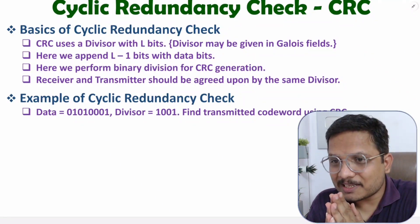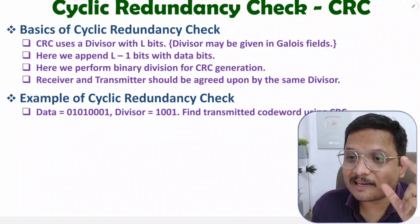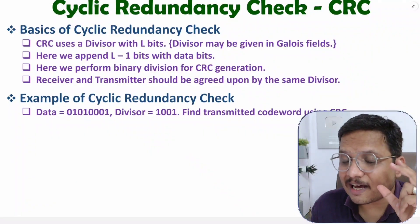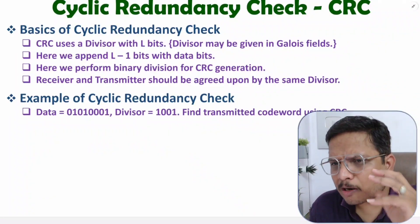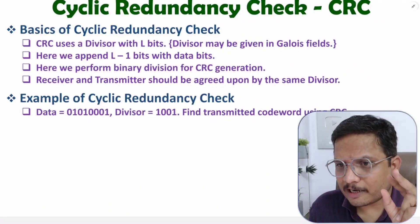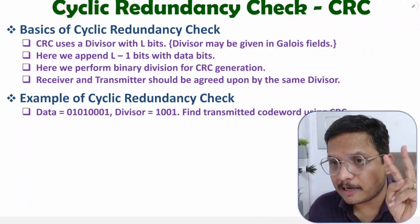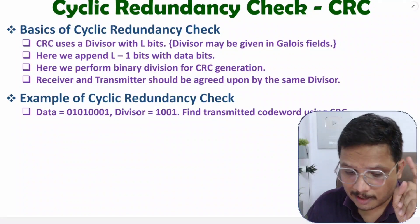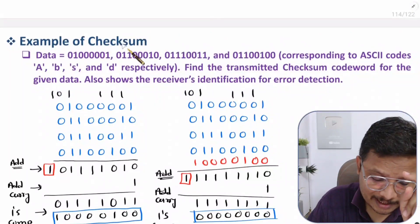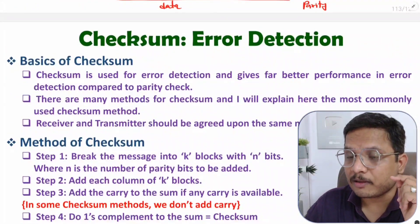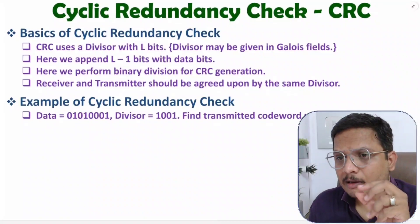Hello friends, welcome to Engineering Funda. In this video I am going to explain Cyclic Redundancy Check (CRC) for error detection. CRC is broadly used in computer networks for error detection. You should know there are two methods widely used for error detection: one is CRC and the second is checksum. In my previous video I explained checksum; here I'll be explaining CRC.